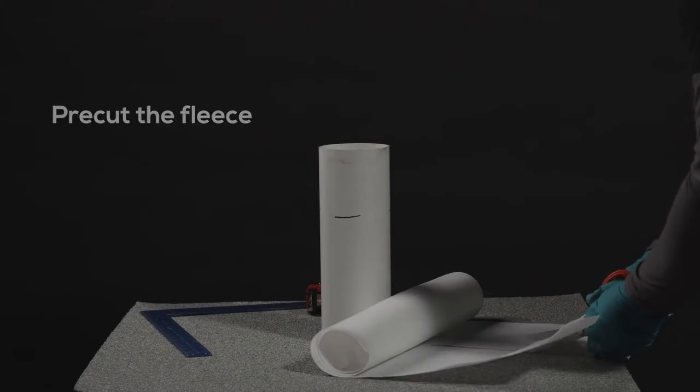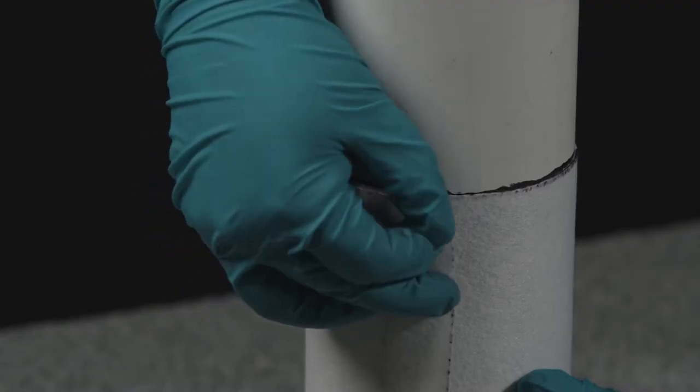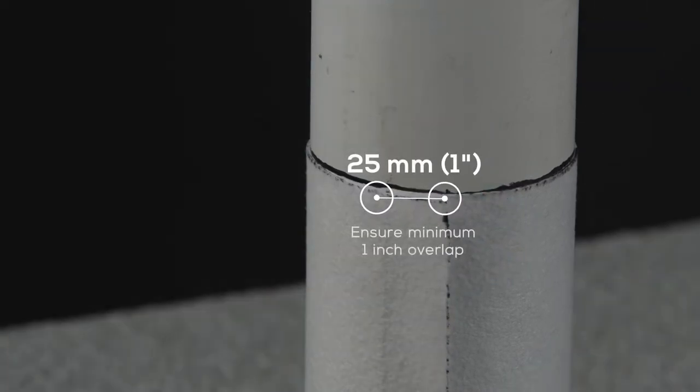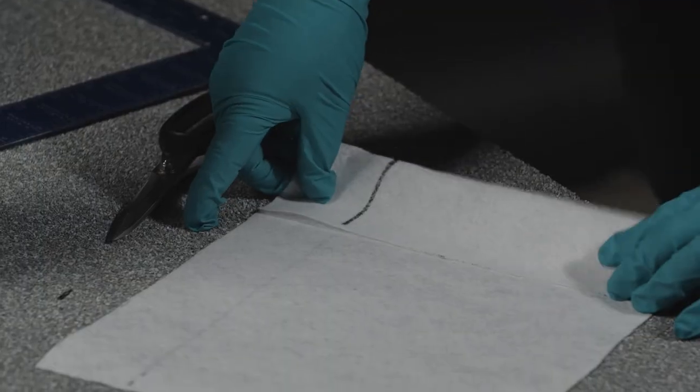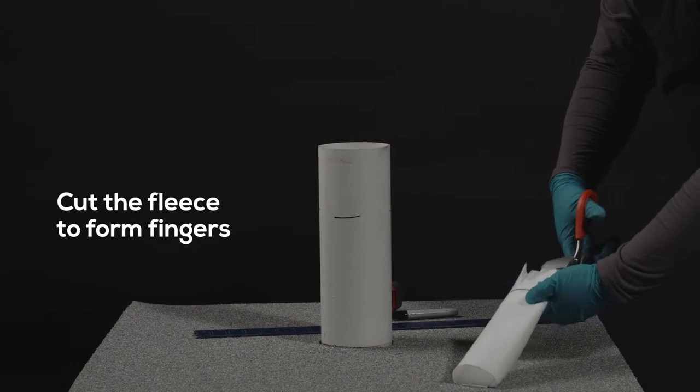Pre-cut the fleece vertical skirt as needed for the penetration. Ensure the fleece wraps around the pipe with a 25 mm or 1 inch overlap. Mark the fleece at 50 mm or 2 inches. Make 50 mm or 2 inch cuts in the fleece to form fingers.